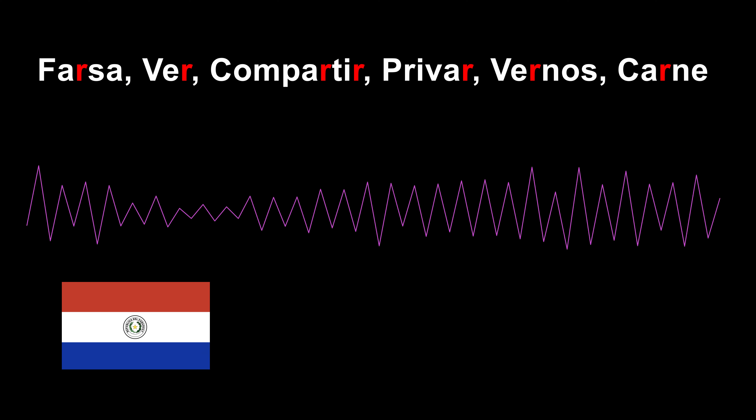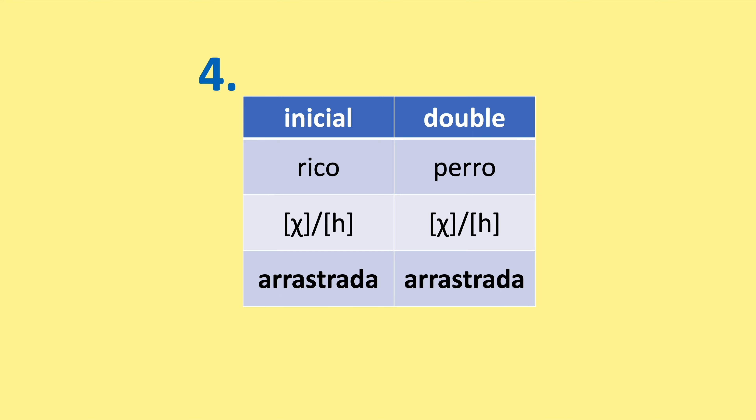Some examples of the English-like R: rico, perro, verde, amor. The fourth type — the arrastrada — is an aspirated sound coming from the throat, such as in 'jico' and 'perro'. Some people pronounce it further back, like 'jico' and 'pejo'.